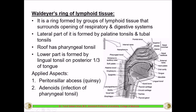The applied aspects related to Waldeyer's ring include peritonsillar abscess, called quinsy — a collection of pus due to infection of the palatine tonsil. Infection and enlargement of the pharyngeal tonsil leads to adenoids, causing difficulty in swallowing and breathing for the child, as the enlarged adenoids block the nasal cavity, preventing the baby from breathing through the nose while suckling.